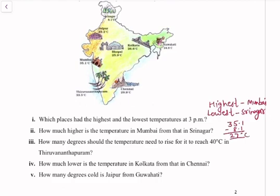How many degrees should the temperature rise to reach 40 degrees Celsius in Trivandrum? In Trivandrum the temperature is 33.5 degrees Celsius. So we subtract 33.5 from 40.0 and get 6.5. The temperature needs to rise by 6.5 degrees Celsius to reach 40 degrees Celsius in Trivandrum.